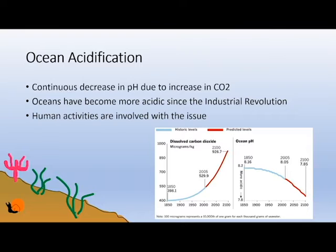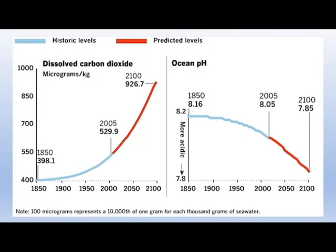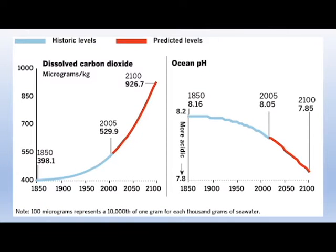This scale can be used to describe the process of ocean acidification. Ocean acidification is the continuous decrease in pH due to an increased amount of carbon dioxide, or CO2, being absorbed by oceans. Basically, the ocean is becoming acidic when it should be close to neutral.